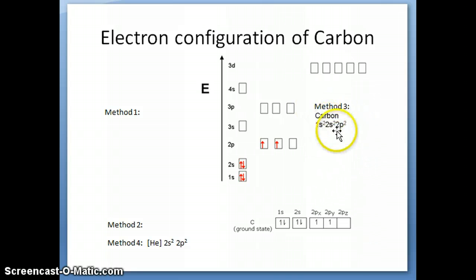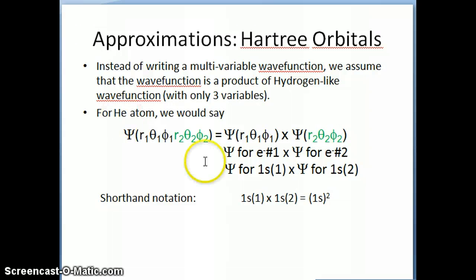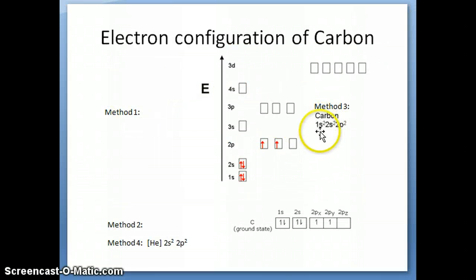Method three is to use the writing to illustrate this, and this is the one that I talked about in the previous video, where basically it's a shorthand notation for these hydrogen-like orbitals, the multiplication of these orbitals together. So for carbon, you would say 1s², and that means you're multiplying the wave function of 1s for electron 1 times the wave function of 1s for electron 2. Then 2s², same procedure, and then 2p² as well. This is also the one that you're very probably used to seeing in prior chemistry courses.